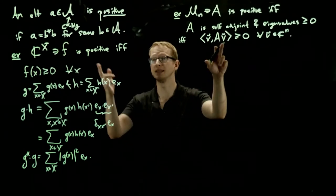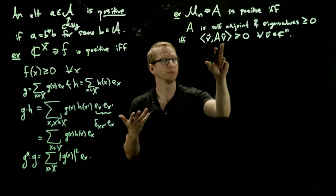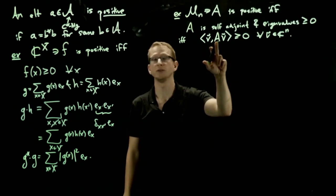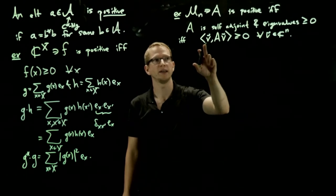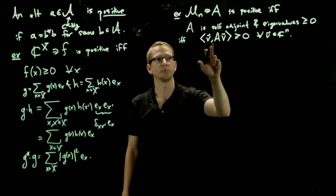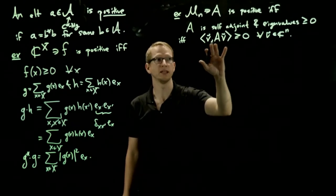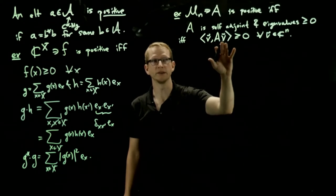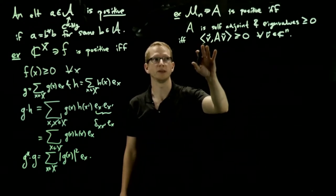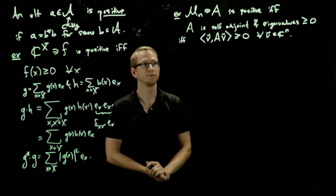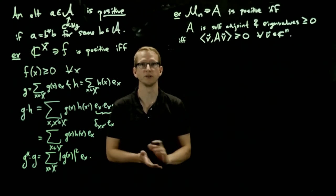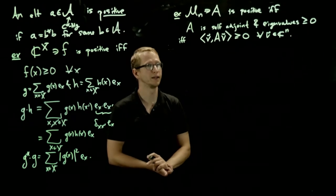And to see that this is positive, given this structure, is even much simpler, because if A equals B star B, then we could move the B star over to the other side, and we get, because this is an inner product, we have a vector with itself, namely B applied to the vector V, take the norm of that vector, which is always going to be a non-negative number. So it's not so difficult to see how these two notions coincide.